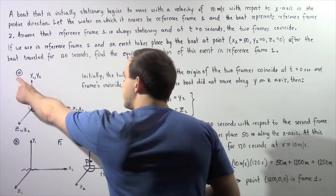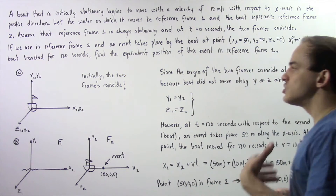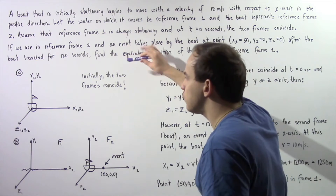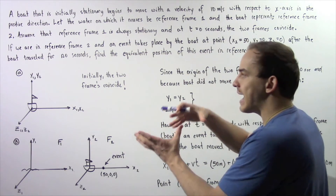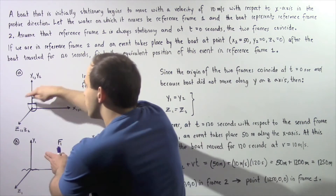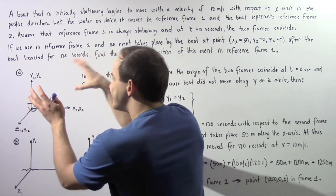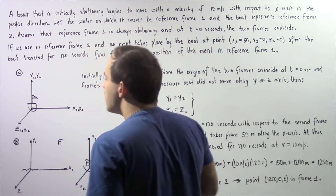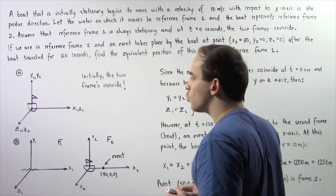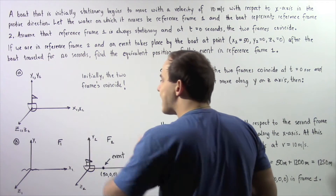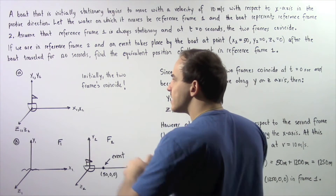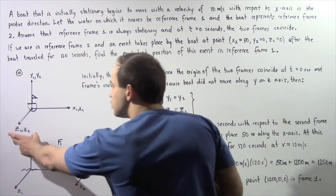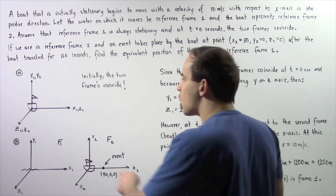Let's begin by looking at the following diagram. In diagram A, at a time of zero seconds, the two frames exactly coincide — the boat is exactly at the origin of frame number one. The two x-axes coincide, the two y-axes coincide, and the two z-axes coincide.